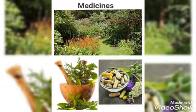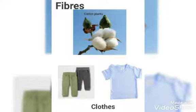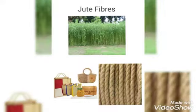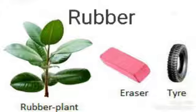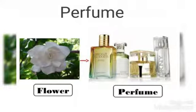Furniture. Fibers from cotton plant and jute plant. Rubber from tree, made for razors and tires. Perfumes.